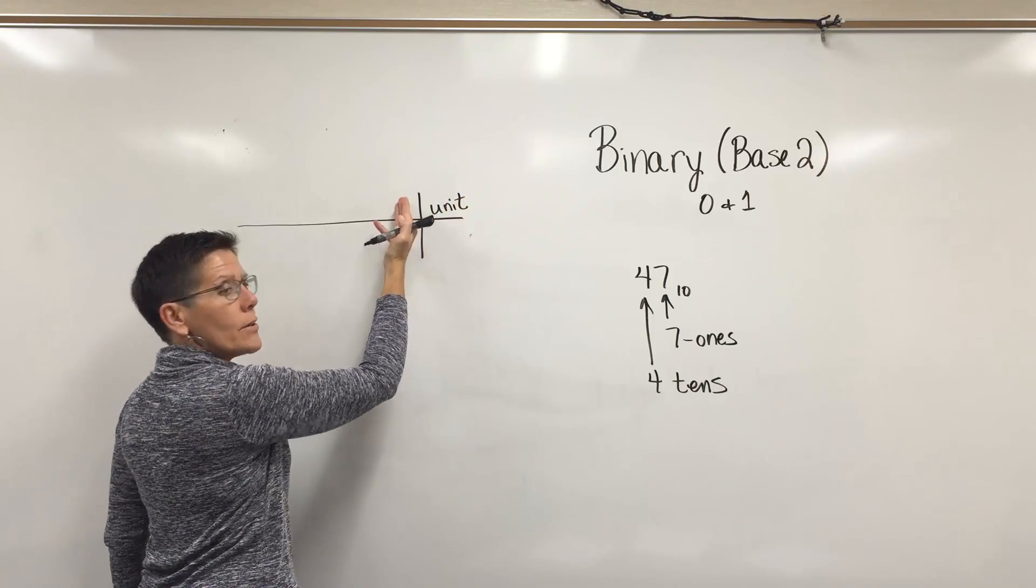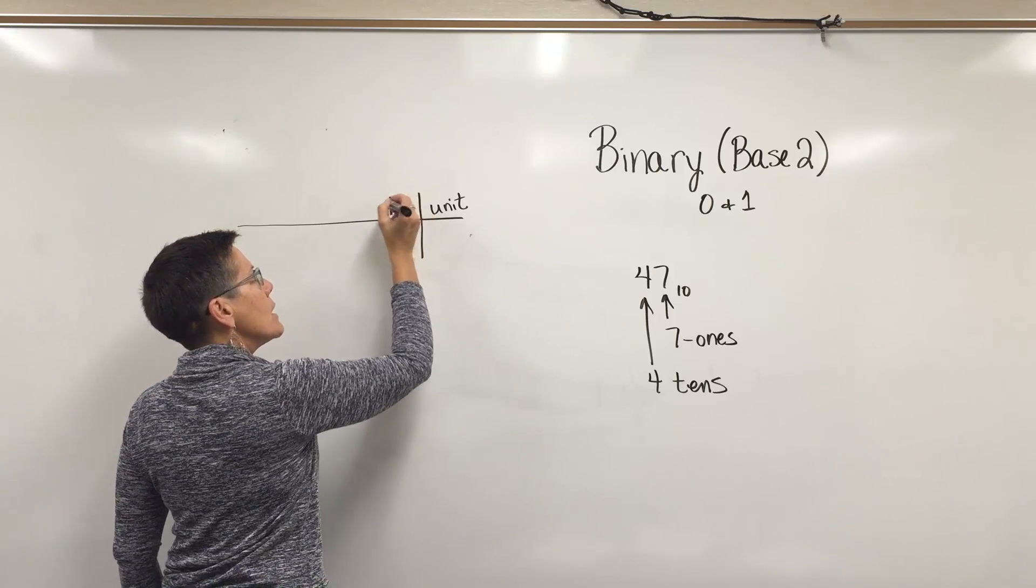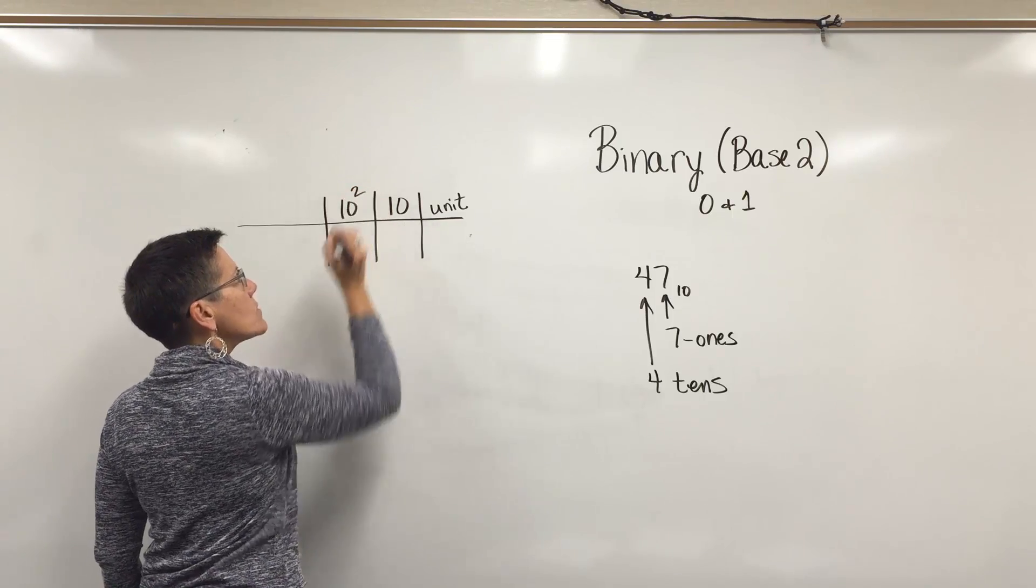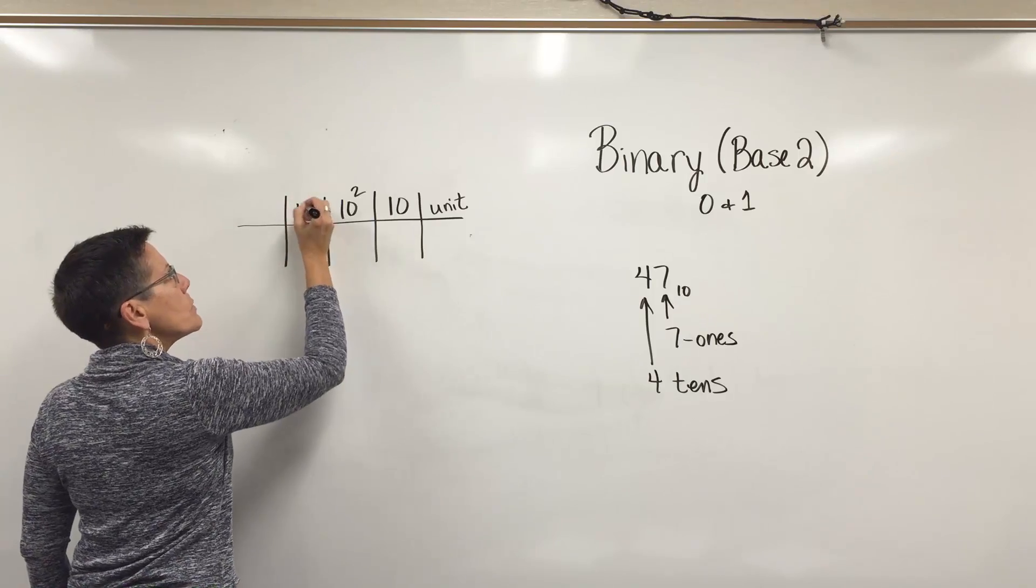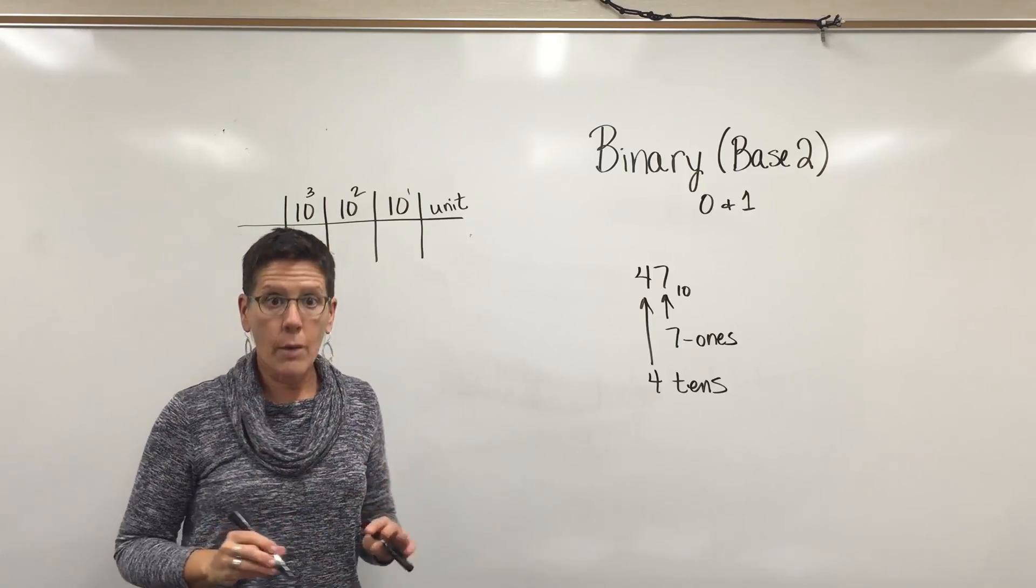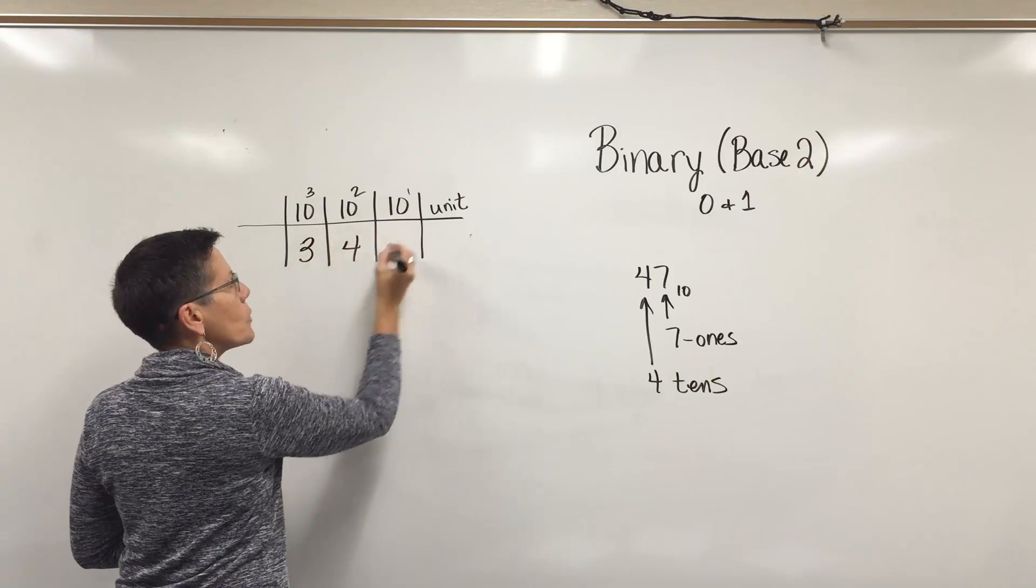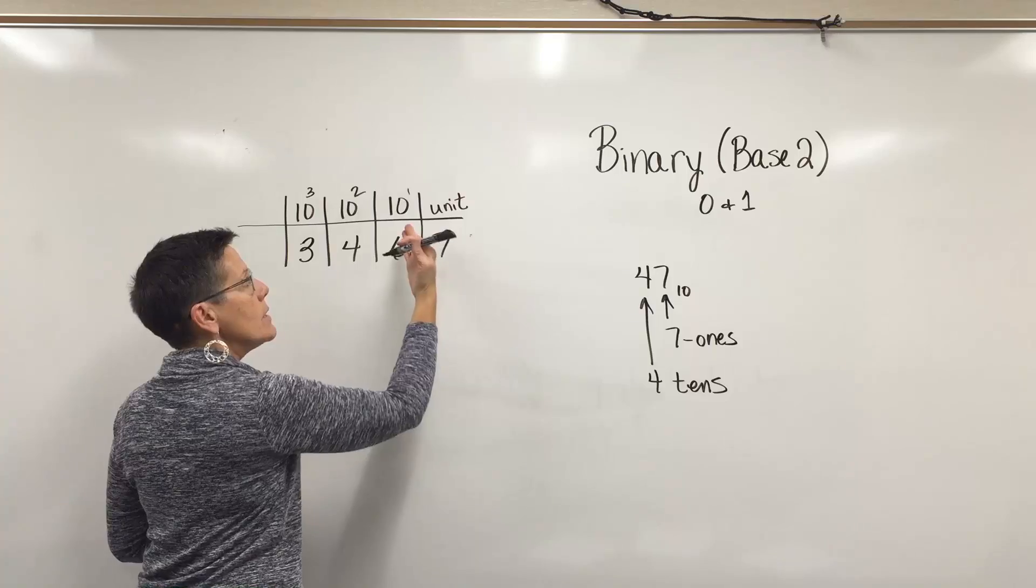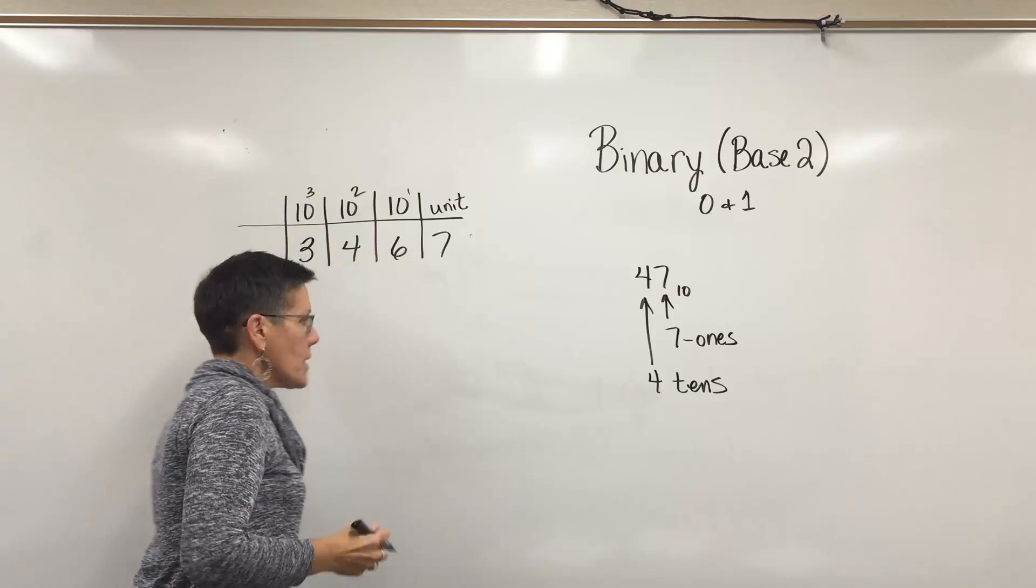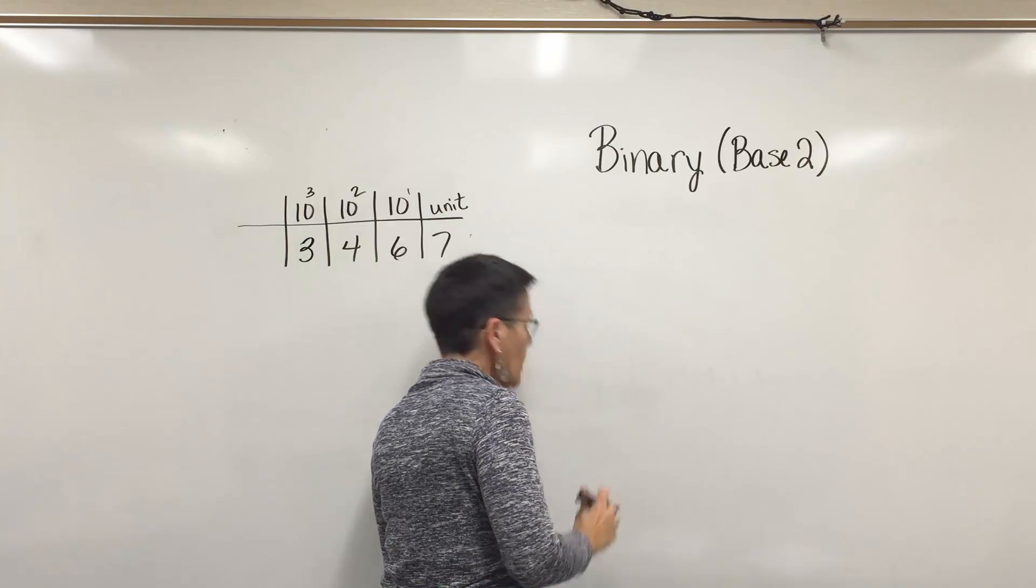In the base 10 world, that would have been the tens position, this was the hundreds position which is 10 squared, this is the thousands position which is 10 to the third power. Even the tens position we might call 10 to the first power. In the base 10 world, I think it was 3,467, so seven units, six tens, four hundreds and three thousands.